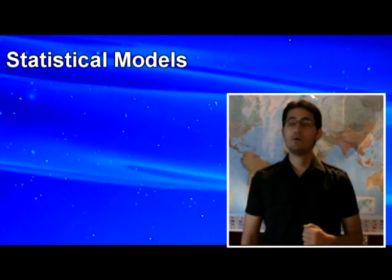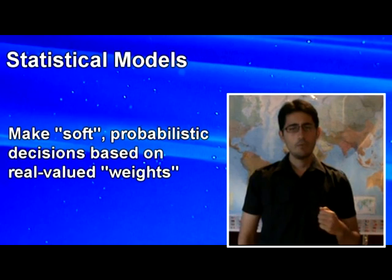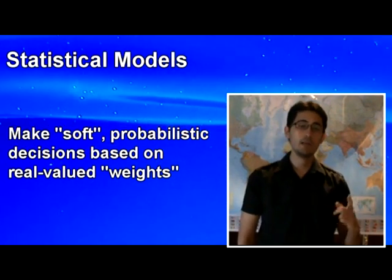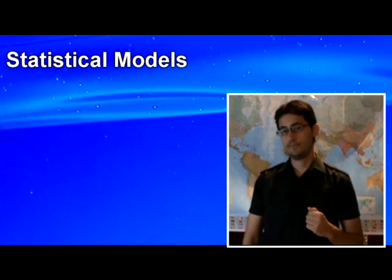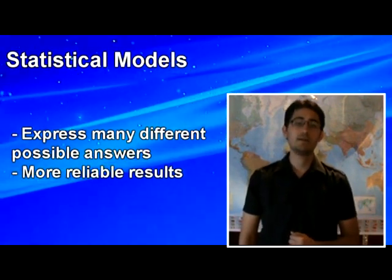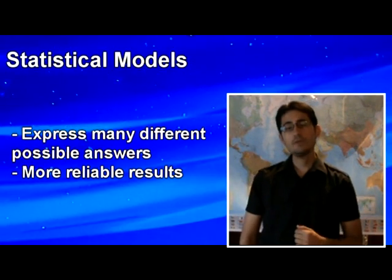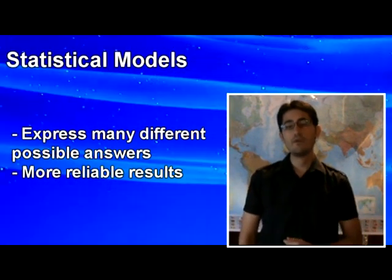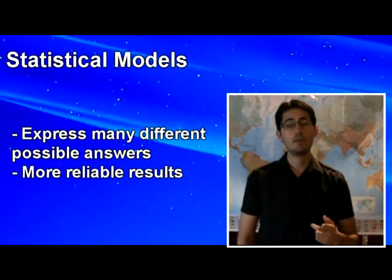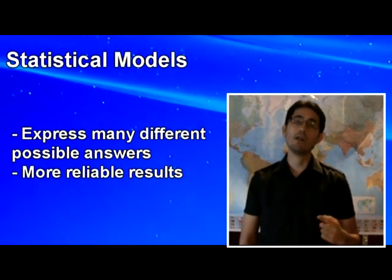Many different classes of machine learning algorithms have been applied to NLP tasks. Research has focused on statistical models, which make soft probabilistic decisions based on assigning real-value weights to each input feature. Such models have the advantage that they can express the relative certainty of many different possible answers rather than only one, producing more reliable results when such a model is included as a component of a larger system.